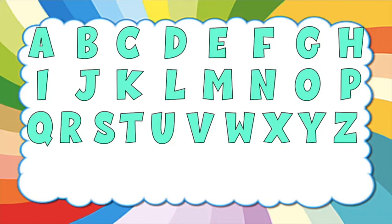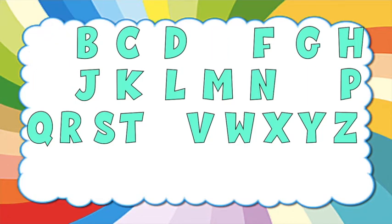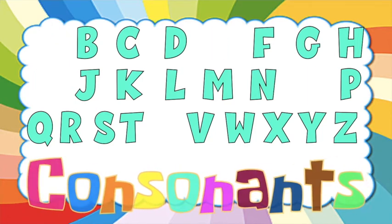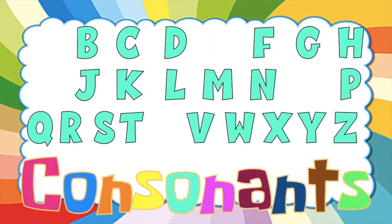Very good! We have A, E, I, O, U. If we remove the vowels in the English alphabet, we're going to have the consonants. So, these letters are the consonants.